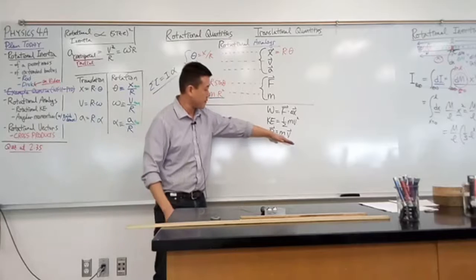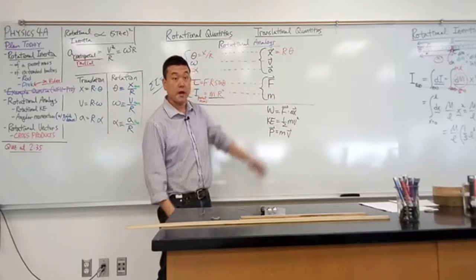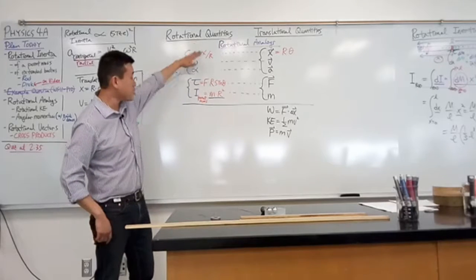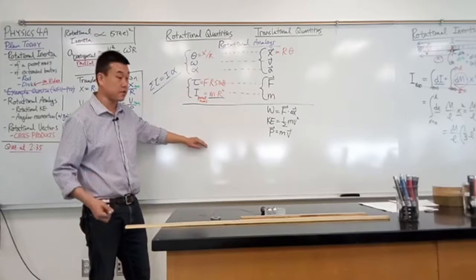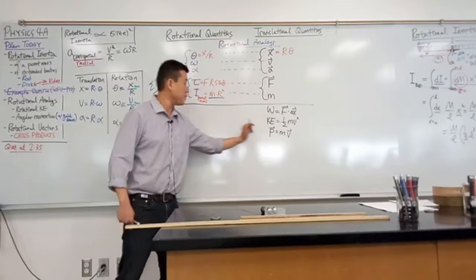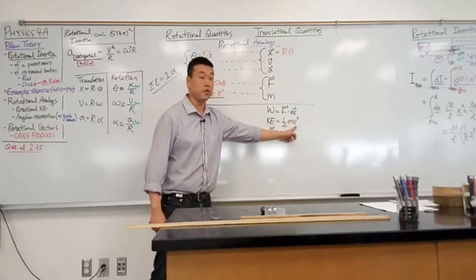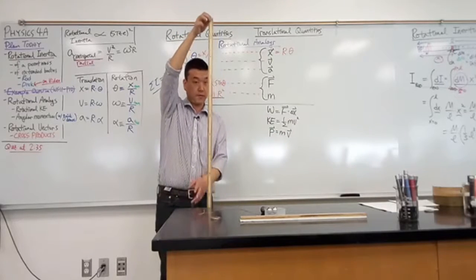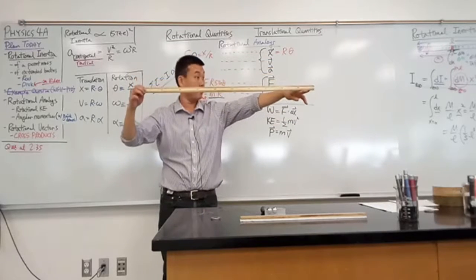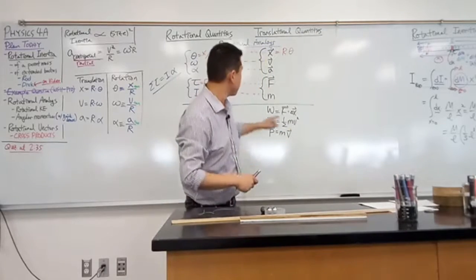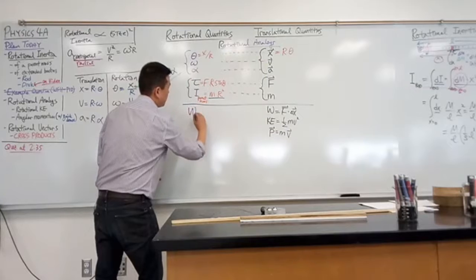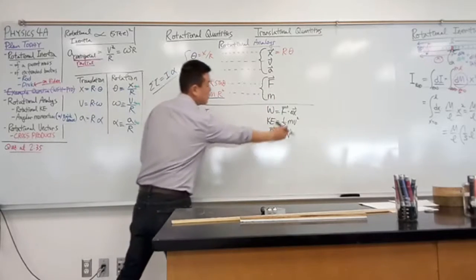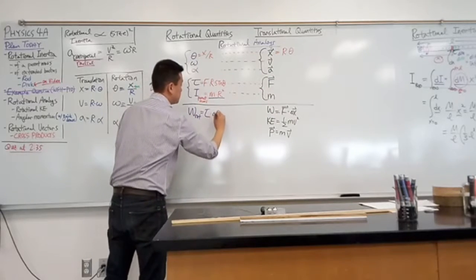For the rotational equivalents, I don't have to derive these formulas from scratch. I can simply look at the translational formulas, copy them over, and convert each quantity into its rotational counterpart. For example, to figure out how much work is done in rotating something from a vertical position to another position, looking at work equals force times distance, I would guess: rotational work equals torque times change in angle.